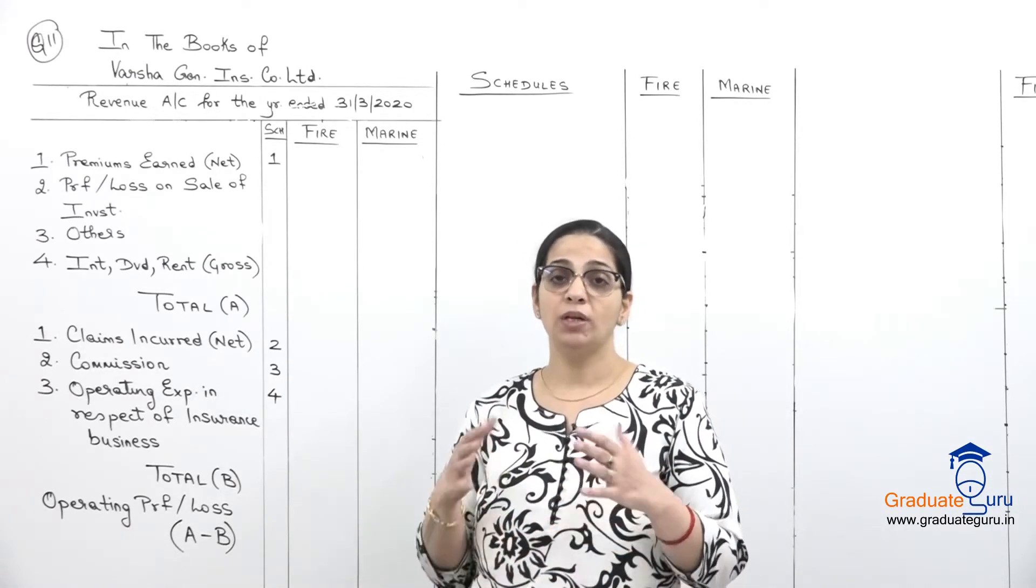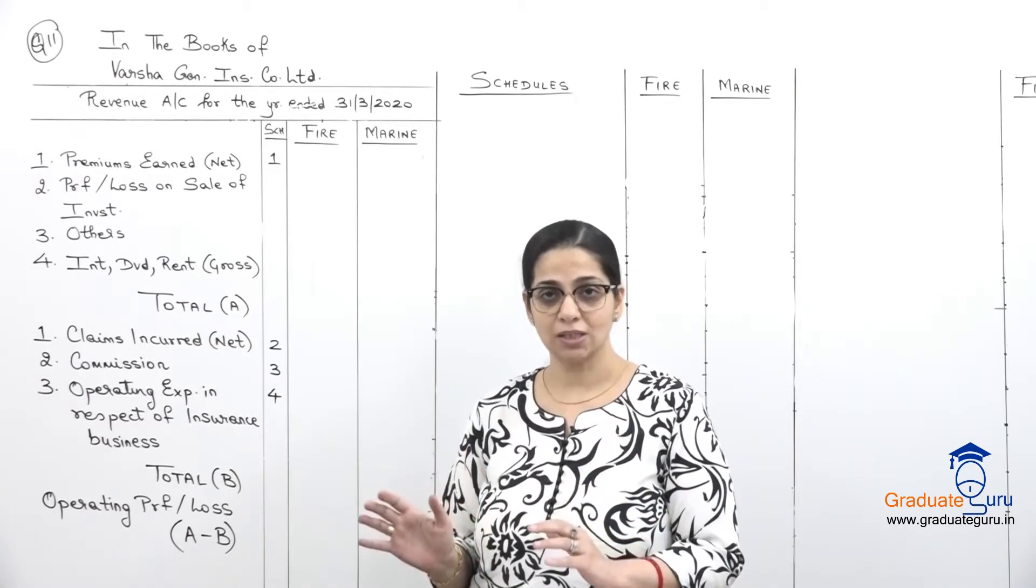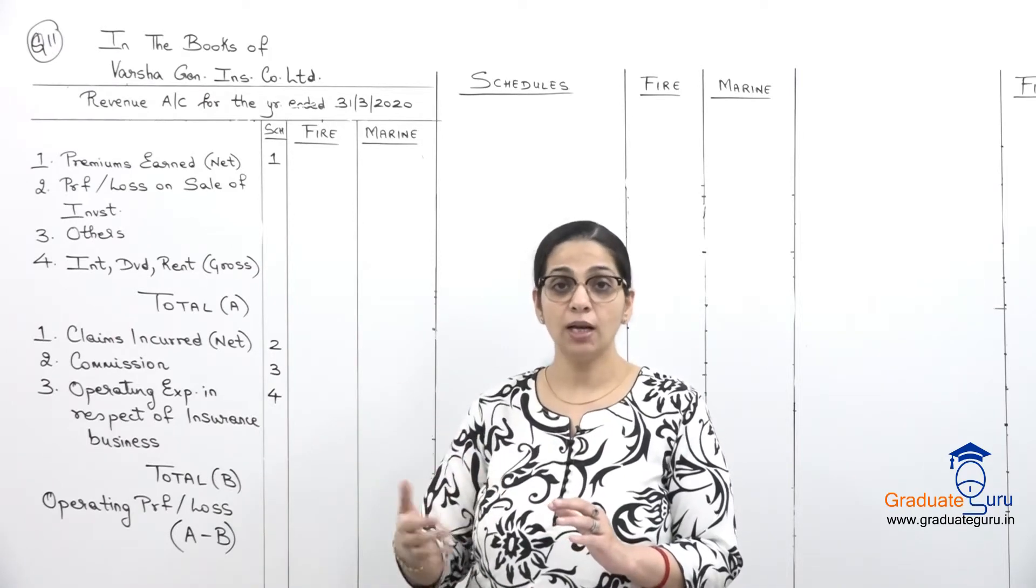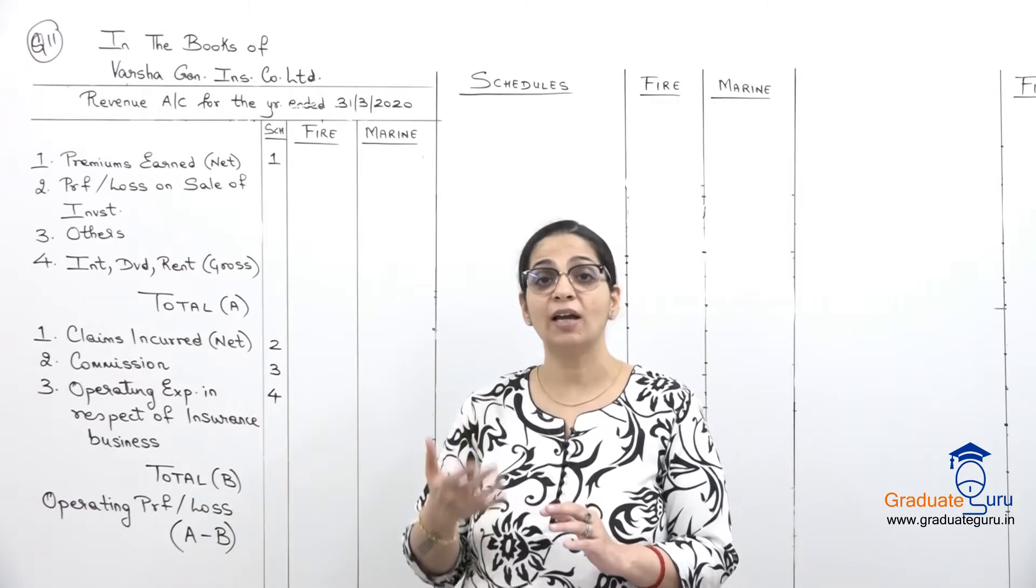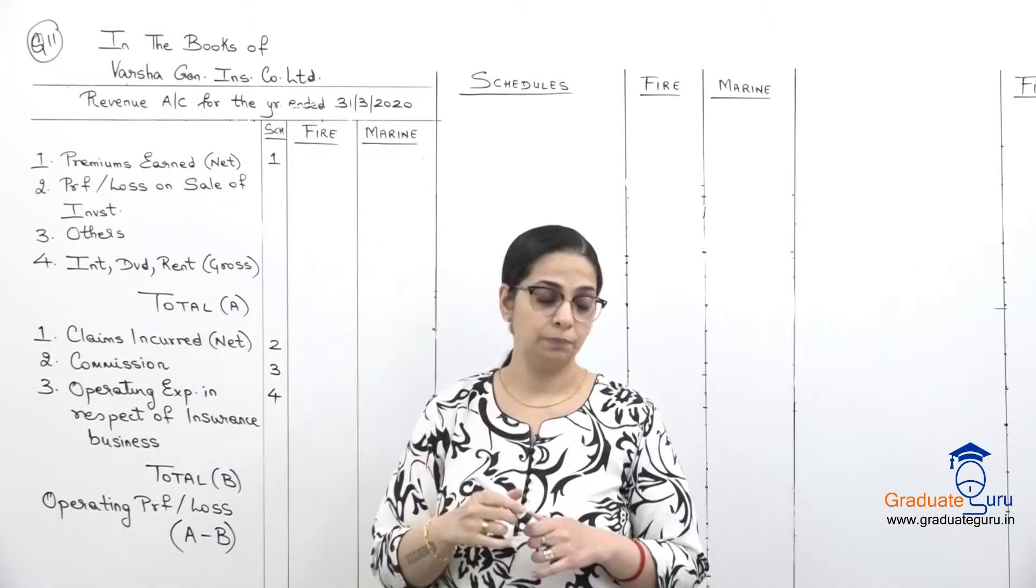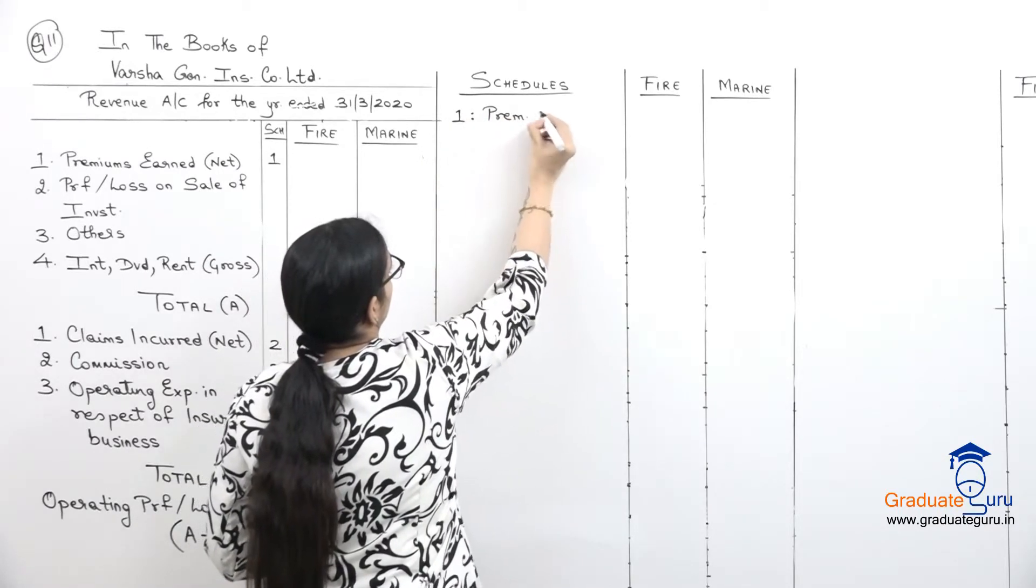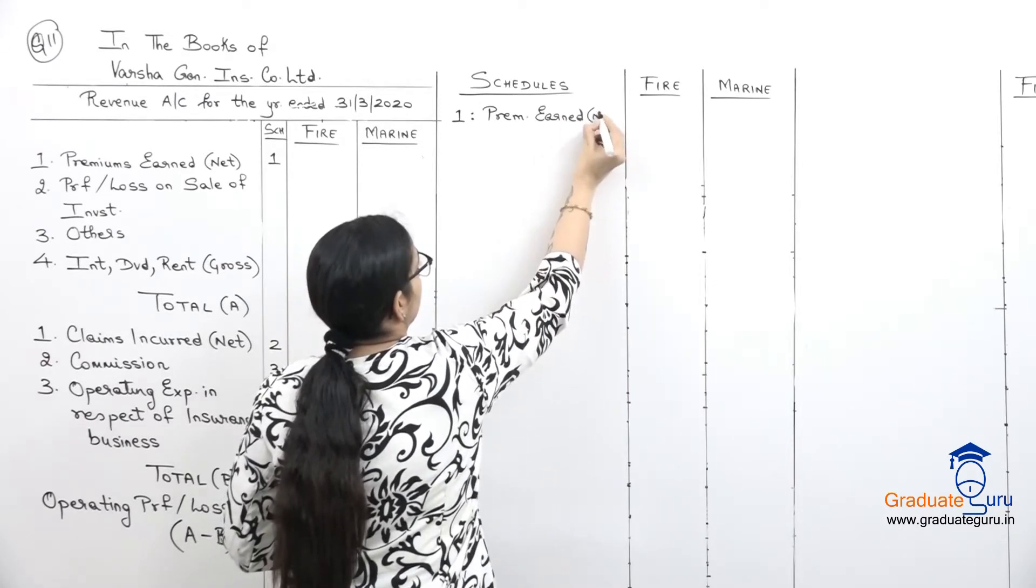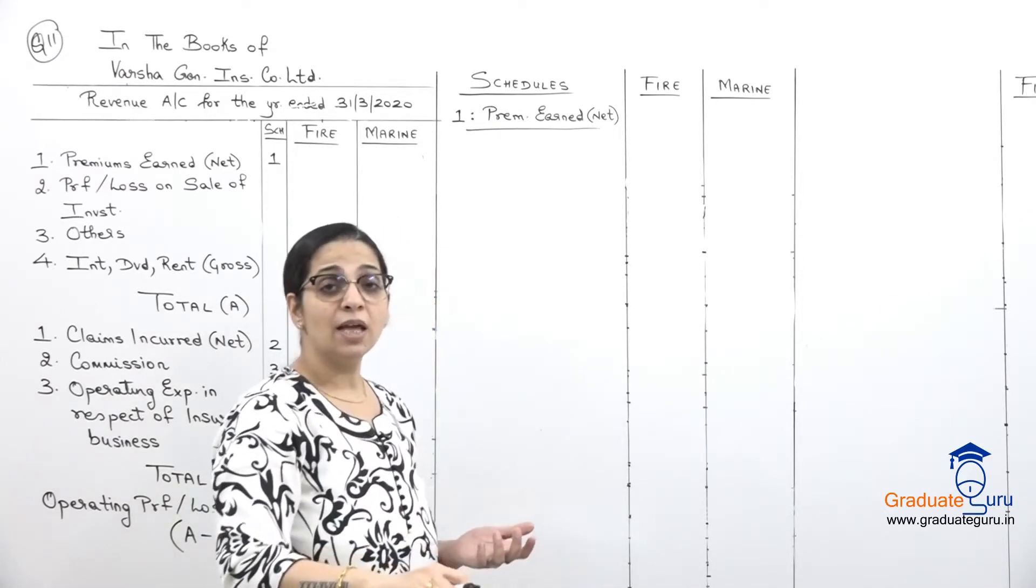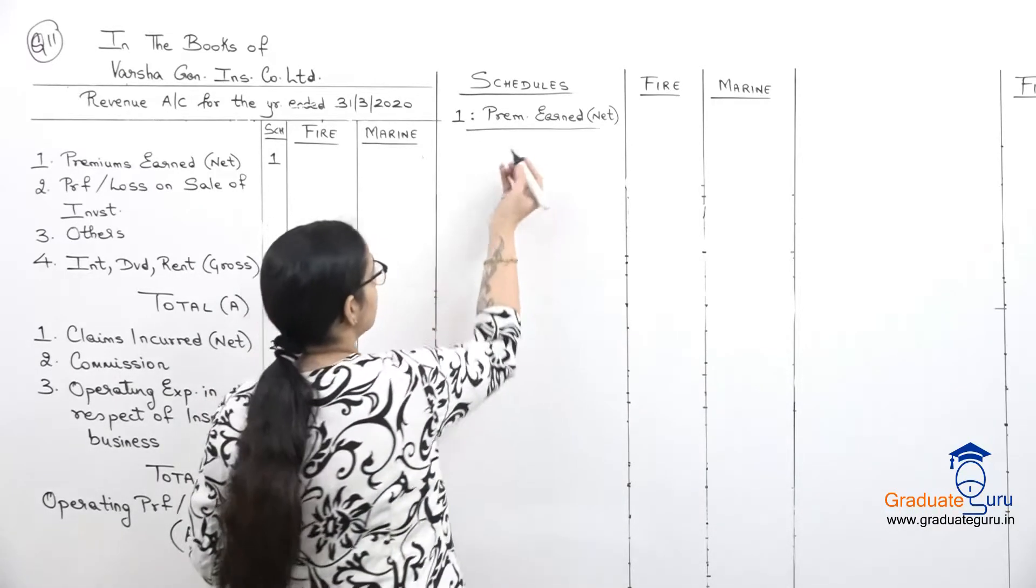Outstanding premium is given in adjustments as on 31st March. For fire business 100,000, for marine business 192,000. They have also said that we have to provide tax at 30%. So first we are going to prepare our revenue account. Let us begin the sum with our first schedule, which is always for premium earned.